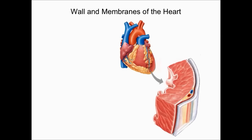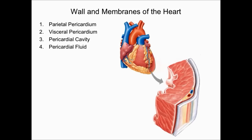Here we'll look at the composition of the wall of the heart and its inner lining. From the previous slide we've already talked about the parietal pericardium, the visceral pericardium, the pericardial cavity, and the pericardial fluid. The composition of the heart wall itself is called myocardium. Myo means muscle, and cardi means heart, so literally translated, myocardium means heart muscle.